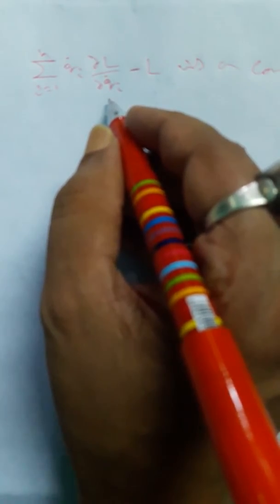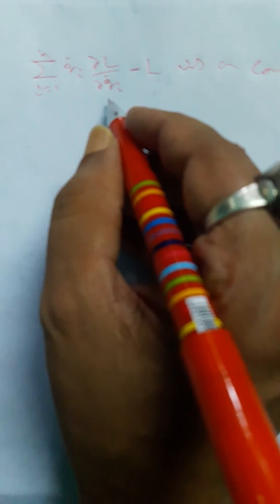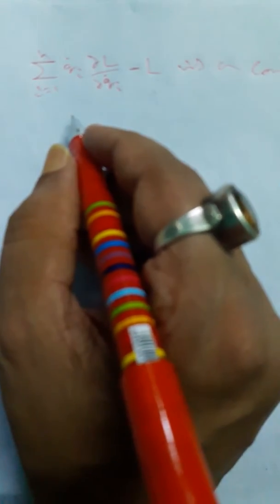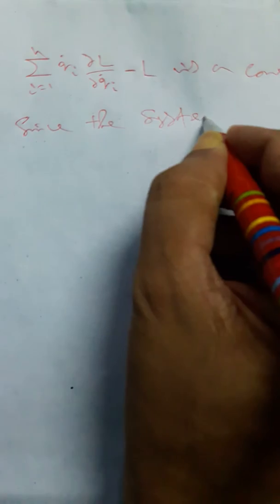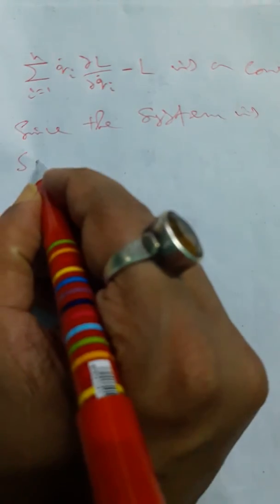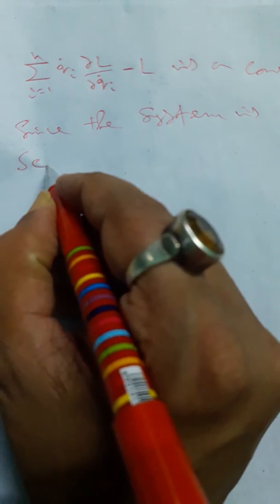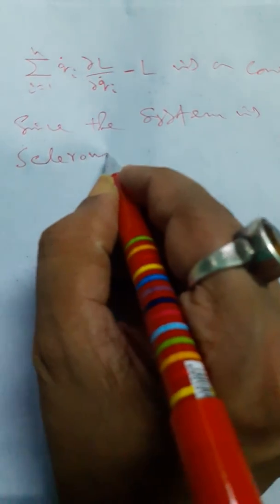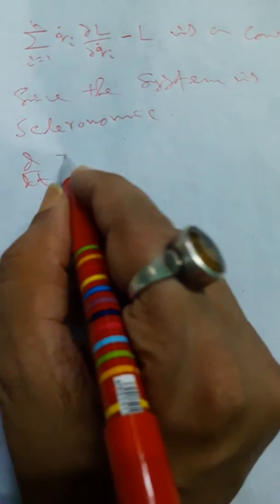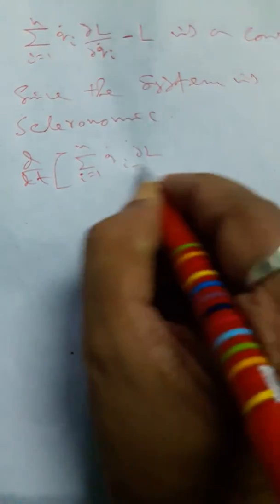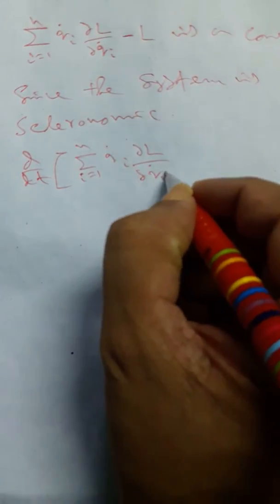To prove this, since the system is scleronomic, we take d/dt of the quantity: summation from i equals 1 to n of q-dot-i times (∂L/∂q-dot-i) minus L. Breaking the bracket using the product rule derivative: